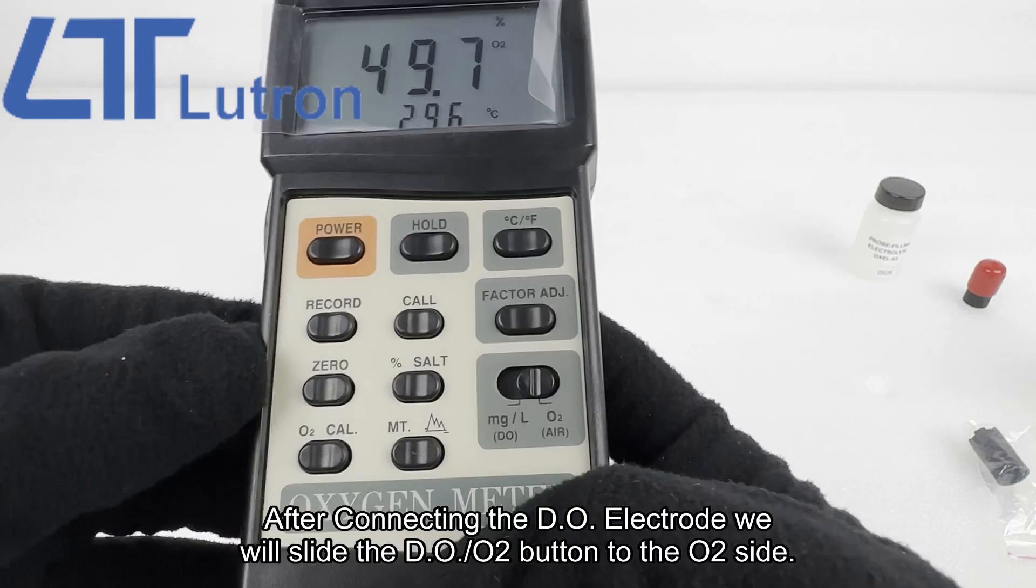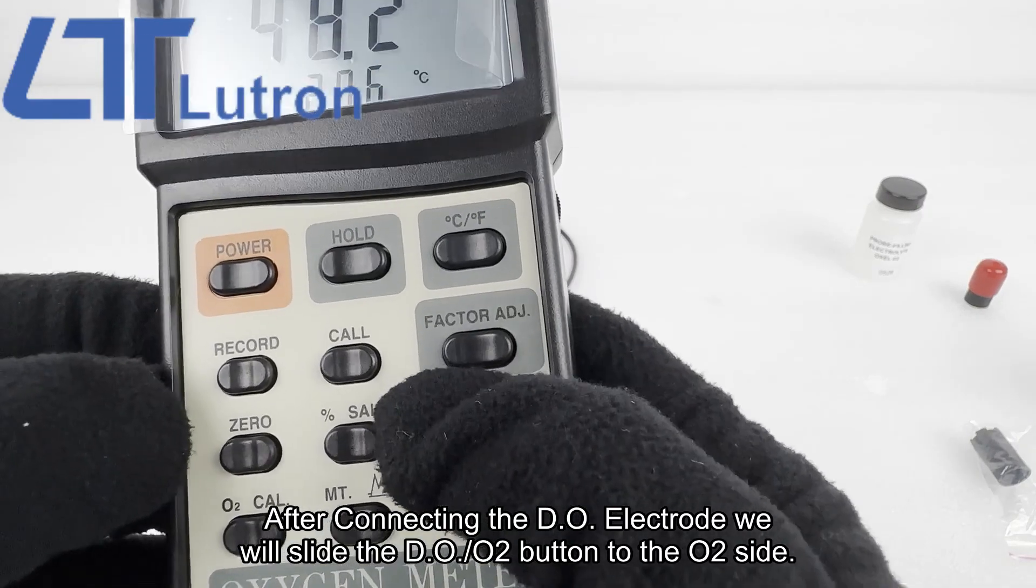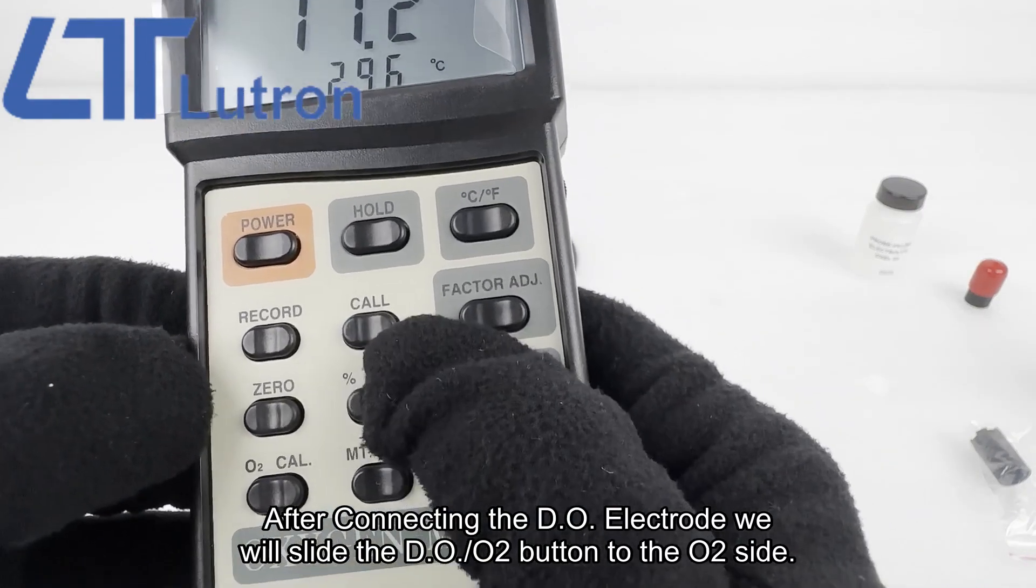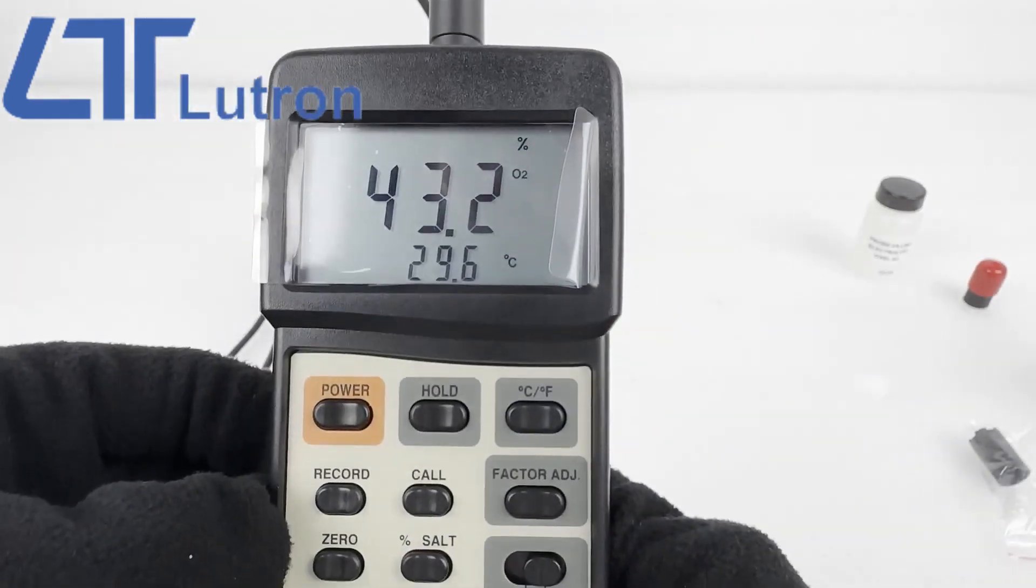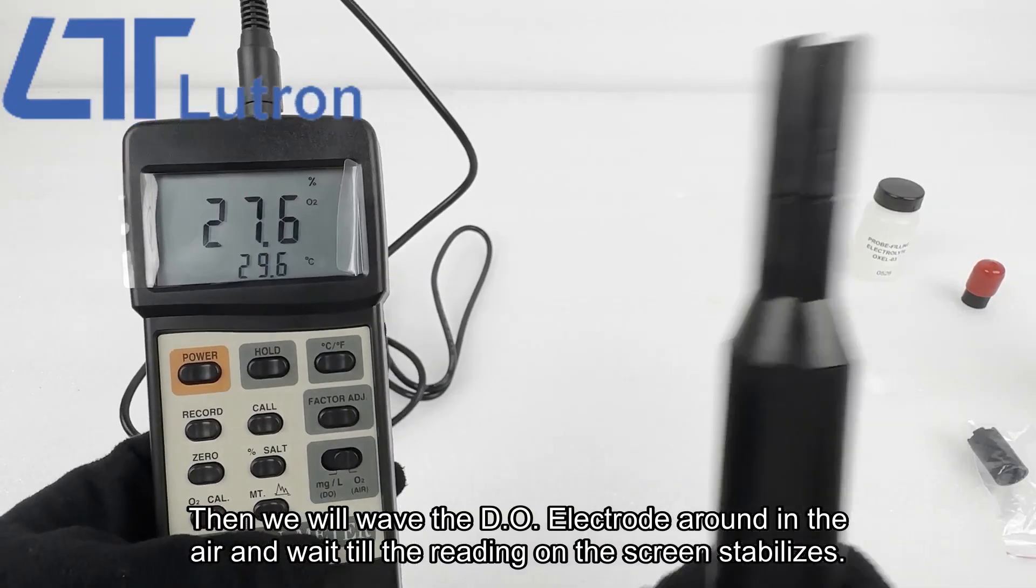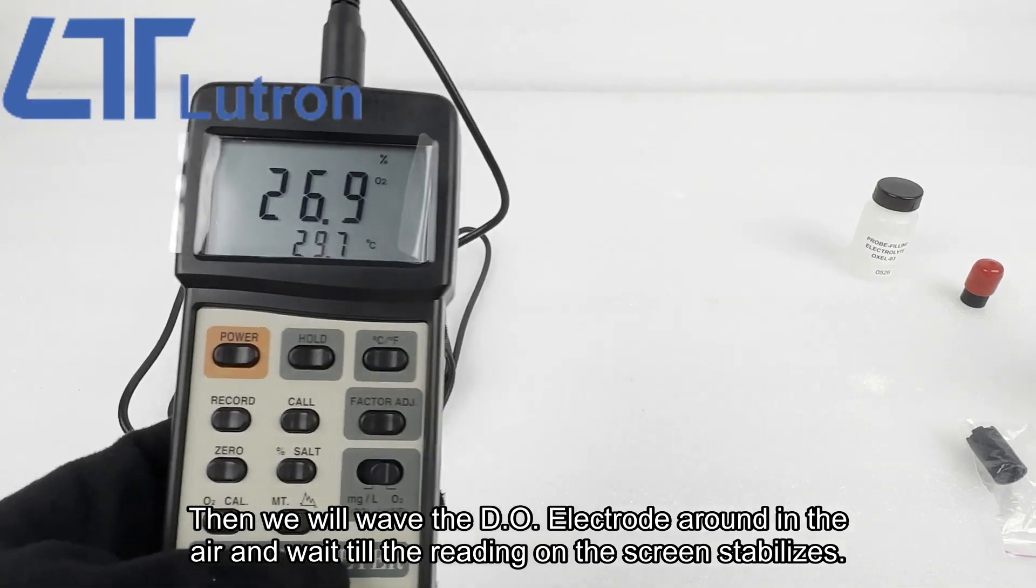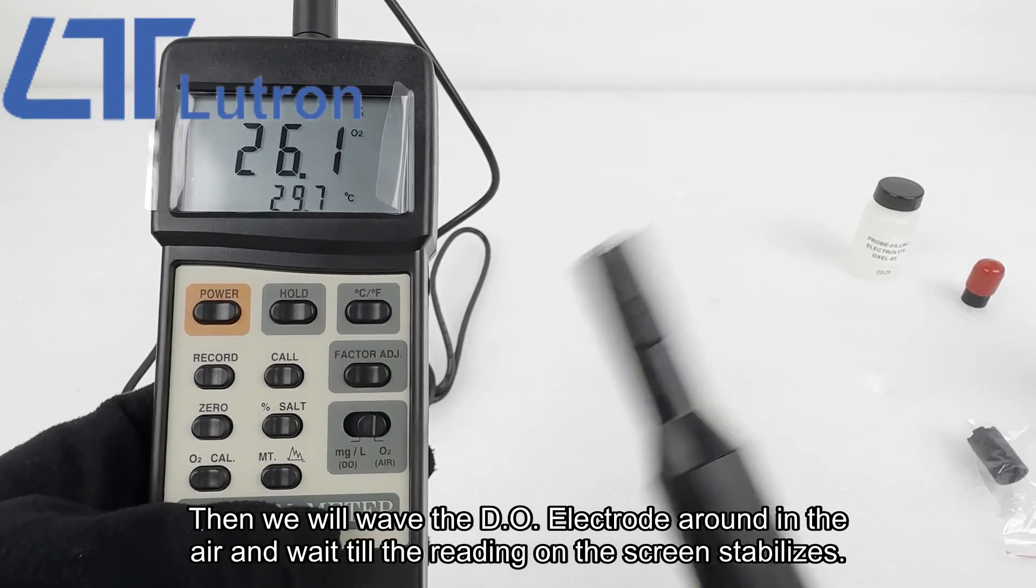After connecting the DO electrode, we will slide the DO O2 button to the O2 side. Then we will wave the DO electrode around in the air and wait till the reading on the screen stabilizes.